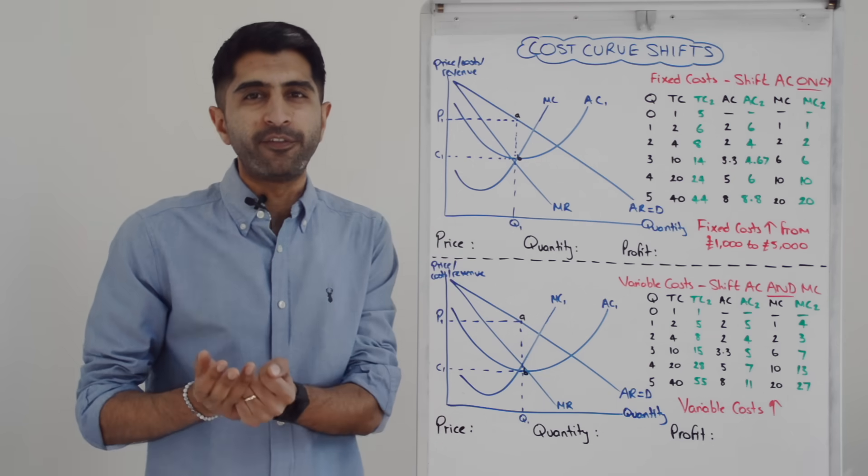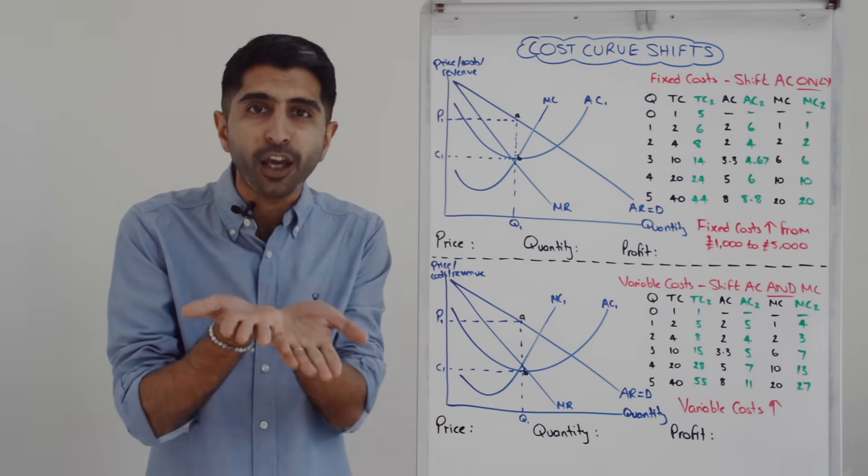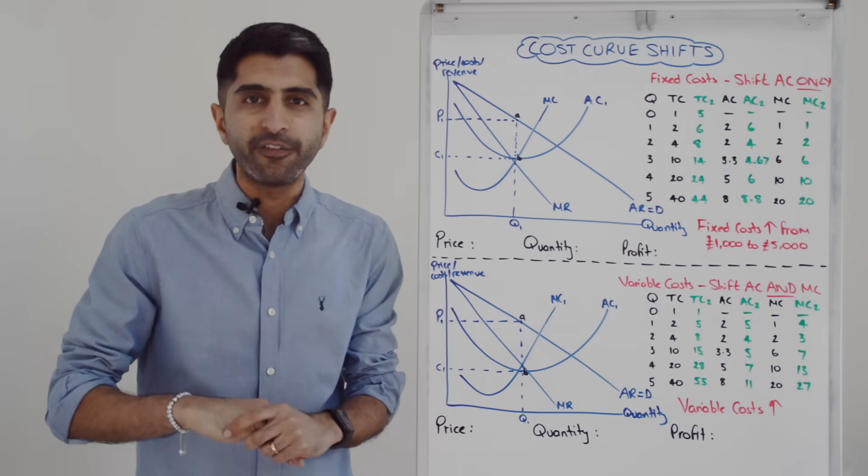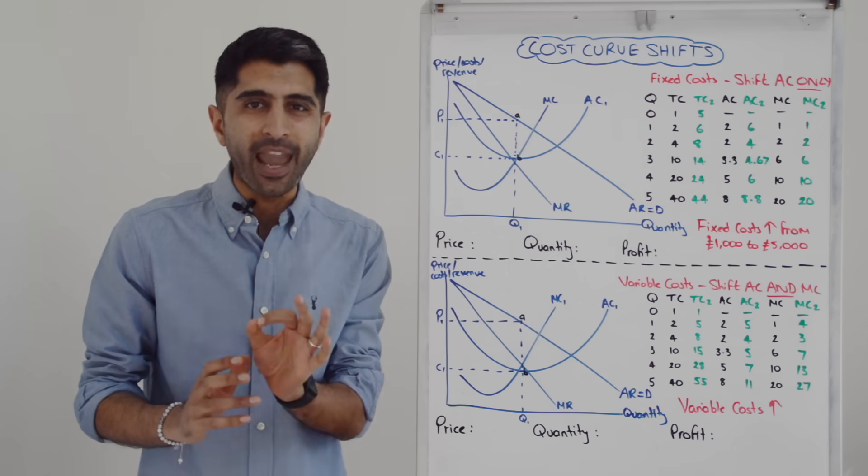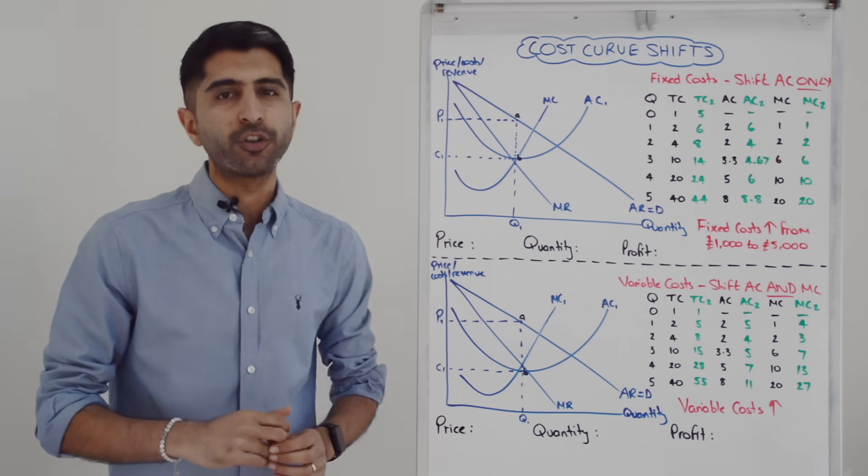So an increase in fixed costs, we would shift the AC curve upwards only. Whereas a reduction in fixed costs, we would shift the AC curve downwards, only the AC curve, not the marginal cost curve.